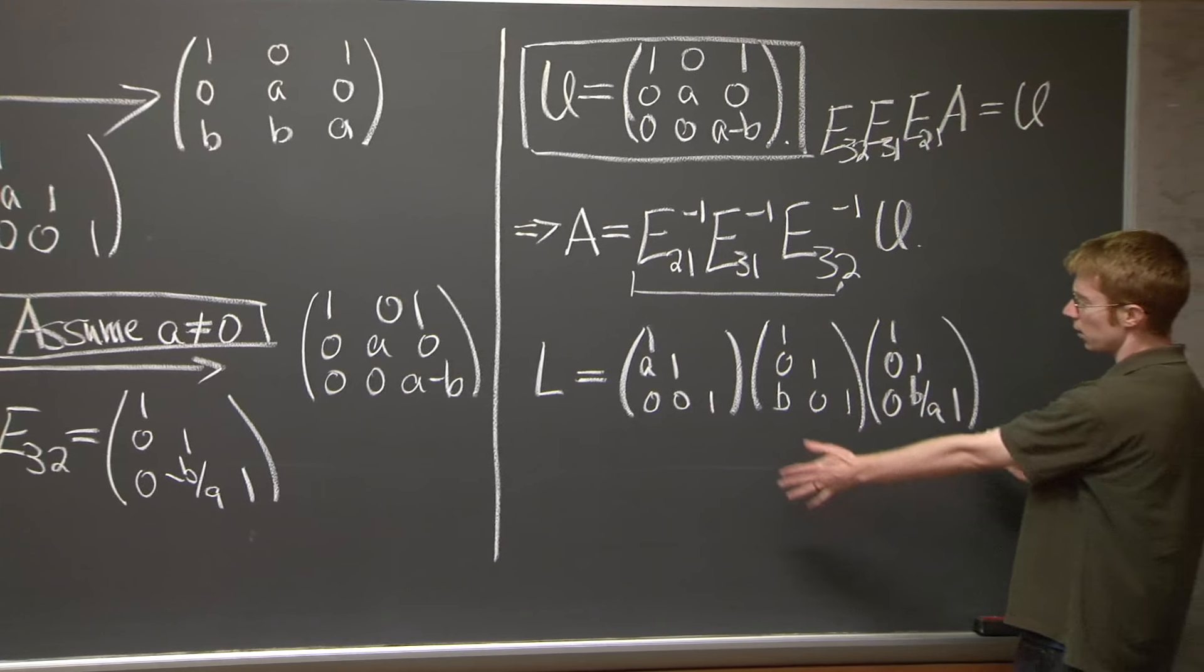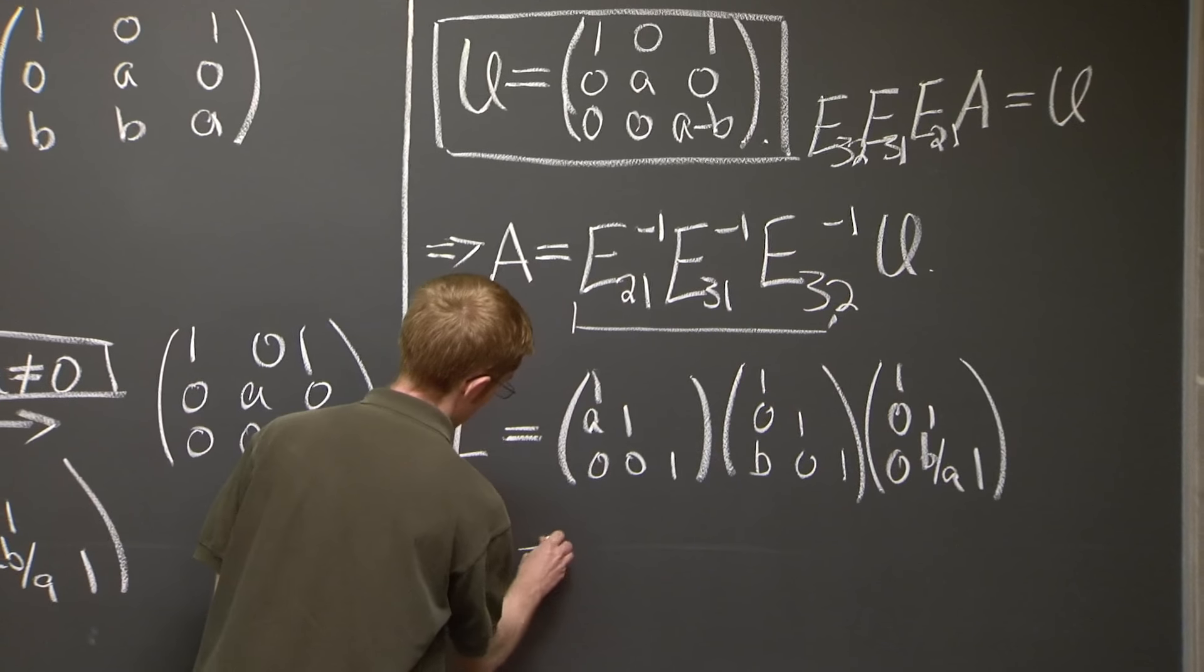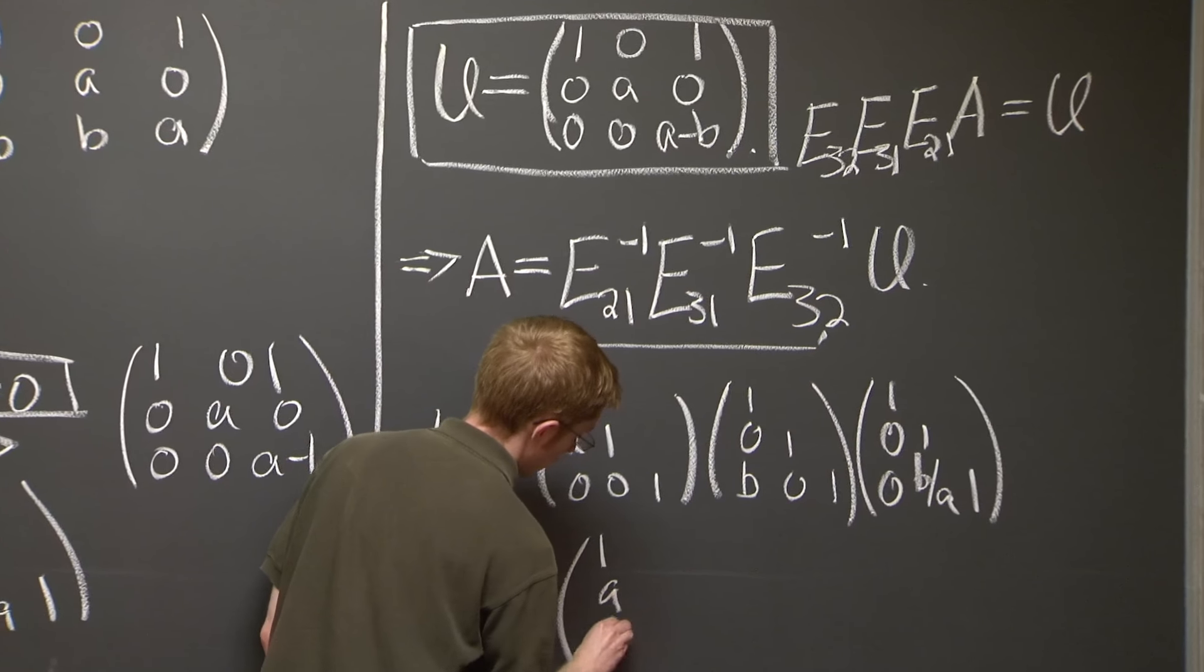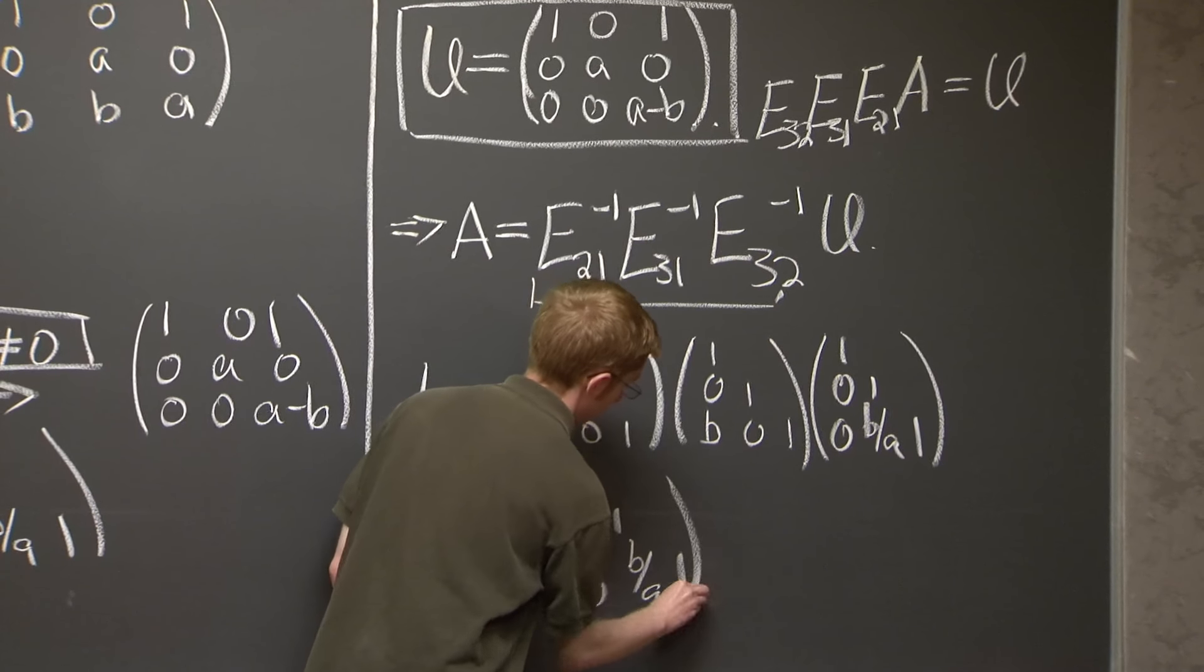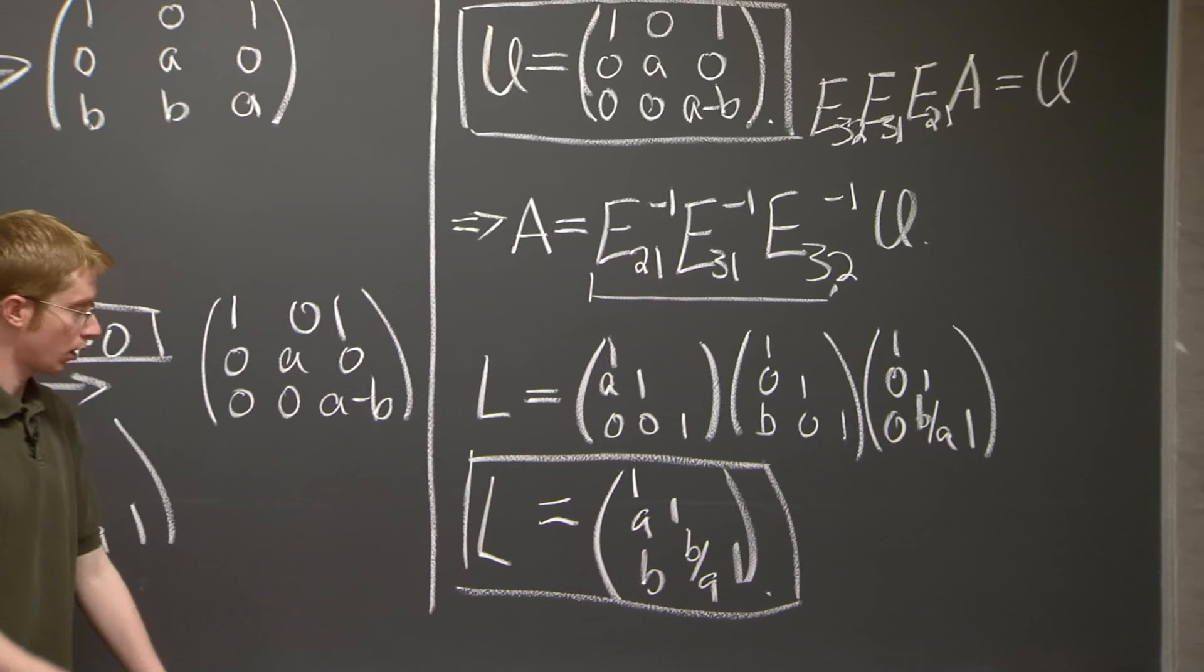And the last comment is that multiplying these three matrices is really easy in this order. Turns out, all you do is you just plop these entries right in. 1, 1. Good. So this is our L matrix. Good.